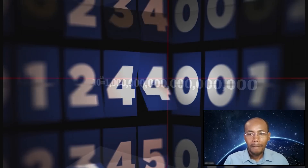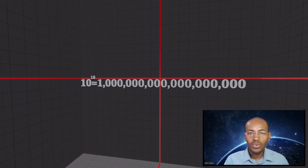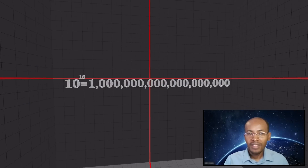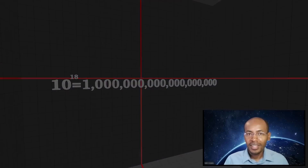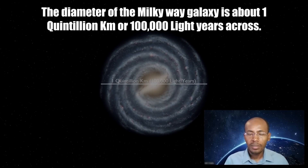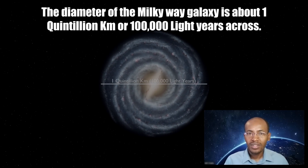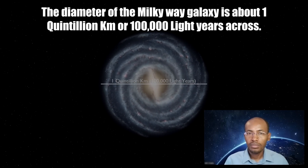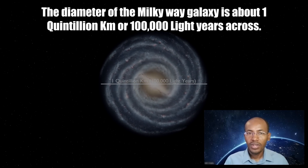It doesn't make sense to count to 1 quintillion anymore. By getting to 1 quintillion, we left Elon Musk and all the billionaires long behind. It is also believed that the diameter of the Milky Way galaxy is about 1 quintillion kilometers, or 100,000 light years across.